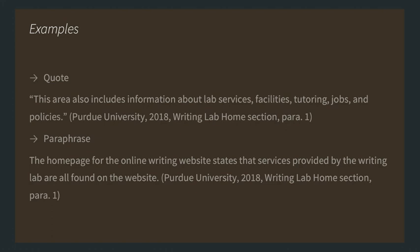Here are some examples. By quoting, I have used the exact words of the original author in quotation marks, and then after the quotation you can see the in-text citation. In this case, an in-text citation includes the author's last name, the date, and the page or paragraph number. However, I'm citing a website here and there is no author, so I am using the organization's name — Purdue University — and I've also included the Writing Lab Home section, paragraph 1, because there are many different web pages on the Purdue University site, and the reader needs to find the information.